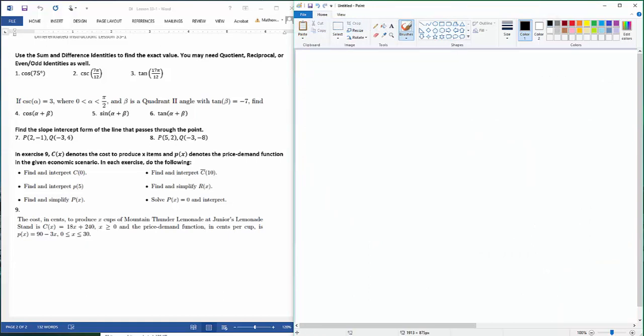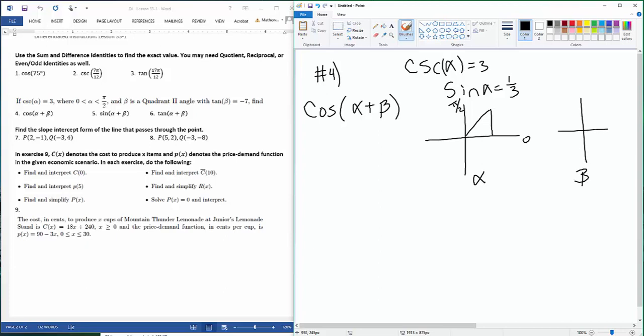Let's look at number four. For number four, it says find the cosine of α plus β, given that cosecant α is 3. So if cosecant α equals 3, that means that sine of α equals 1/3, right? Because it's the reciprocal. And it says that α is between 0 and π/2. So here's 0, here's π/2. So if α is in there, that means my reference triangle is in quadrant number one. And it says β is in quadrant number two. So this is my α. This will be my β. And we said that it's in quadrant two.